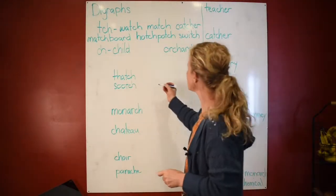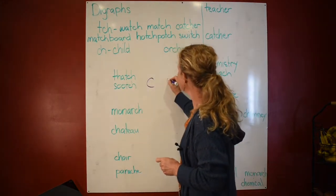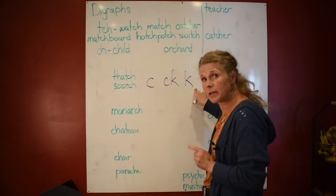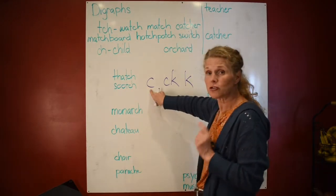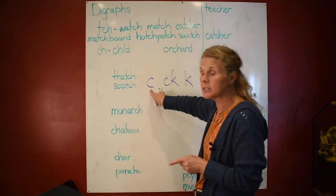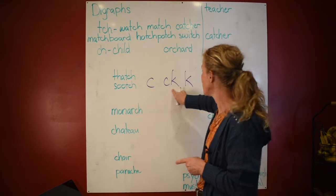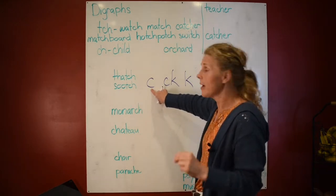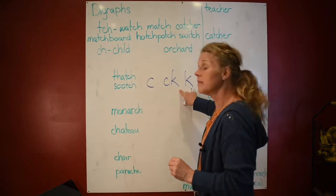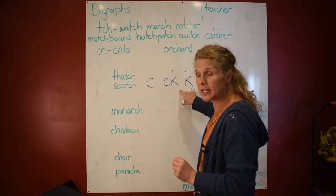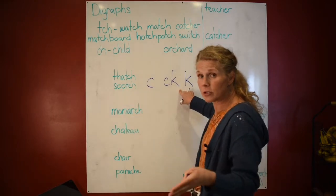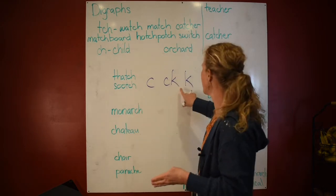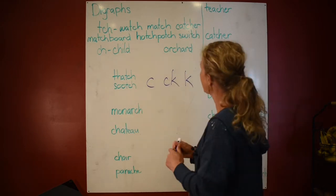So I want to remind you: with C, CK, and K — if you're trying to figure out the K sound in the middle of a word, try C first. If it's followed by an E, I, or Y, you know you can't use it. Then move to CK — if you know it's going to be a short vowel, use CK. If not, use a K.